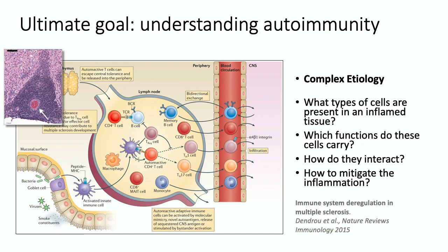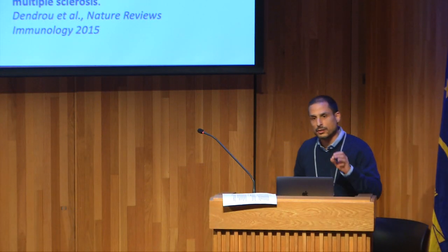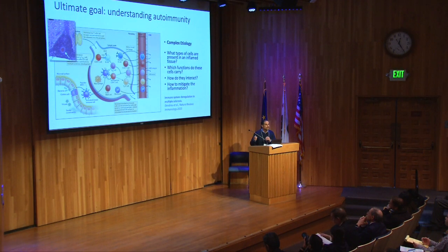Autoimmune diseases — I'm using multiple sclerosis as my example throughout — are very complex diseases with complex etiology. There are a lot of different cell types involved, a lot of different tissues in the body, and very complex interactions between those cells. This is a picture of a lesion from the brain of a mouse with a model of multiple sclerosis. When we look at tissue like that, we want to ask basic questions: what types of cells are present? What functions do they carry? How do they interact? And how can we mitigate the inflammation?